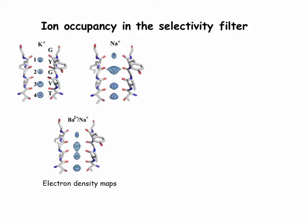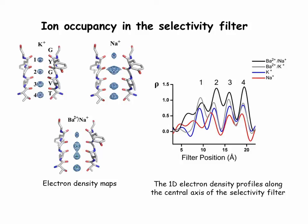To study the occupancy of barium ions in the selectivity filter in the barium-sodium environment, we compared it with those at sodium and potassium environments. The electron density in the filter of the barium-sodium complex is stronger than that of the sodium complex and potassium complex, indicating that the selectivity filter is occupied by a heavier barium ion. By assuming that the area under the peaks of the one-dimensional electron density profile along the central axis of the filter reflects the number of electrons in the filter, we compared the one-dimensional electron density profiles and estimated an increase of 46 electrons compared with the sodium complex. This is roughly equivalent to the replacement of a sodium ion with a barium ion, suggesting a single barium ion bound in the filter of the barium-sodium complex.